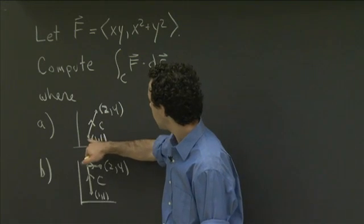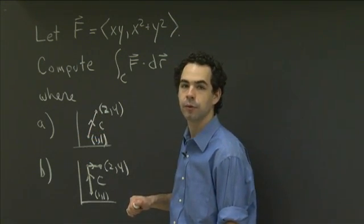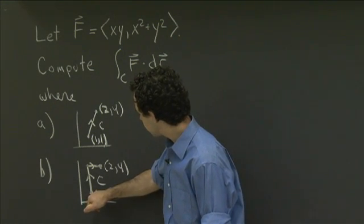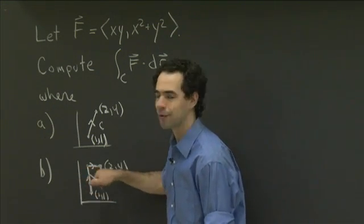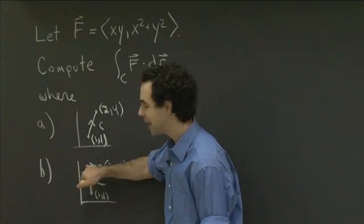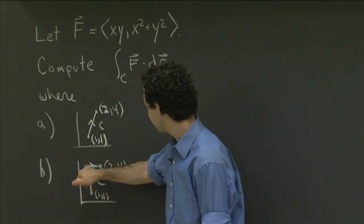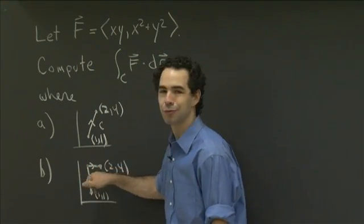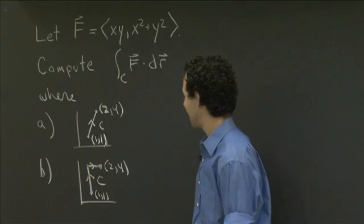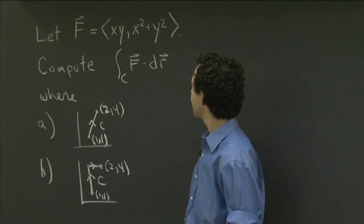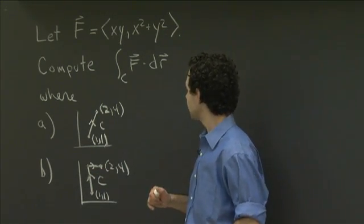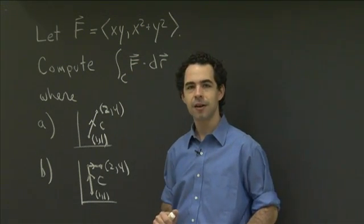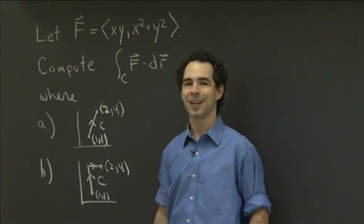In part A, the curve is just the straight line that connects the point (1,1) to (2,4). In part B, the curve is a piecewise path — two sides of a rectangle. It goes straight up until it gets to the point (1,4), and then it goes across to the point (2,4). So it's a piecewise smooth path connecting those two points. I'd like you to compute the integral over each of these curves of F dot dr. Pause the video, have a go at that, come back, and we can work it out together.